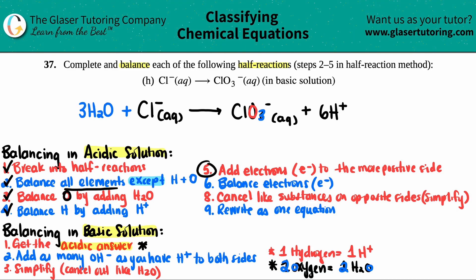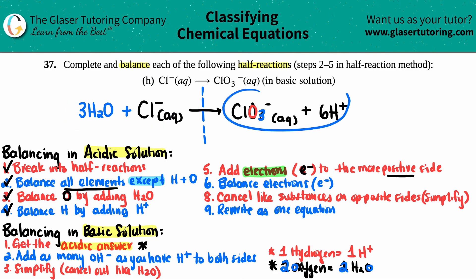We're at the last step — step five — since we only go up to step five. We need to balance the charges by adding electrons, which are negative, to always the more positive side. To figure out which side is more positive, I'll find the overall charge of the reactants and the overall charge of the products.